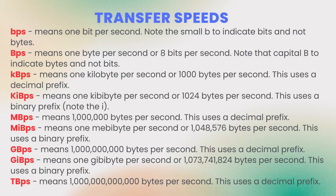These are the units of data transfer speeds. Notice the difference: lowercase 'bps' means bits per second, while uppercase 'Bps' means bytes per second — the small 'b' indicates bits, not bytes. 'kbps' means kilobytes per second, or 1000 bytes per second, and 'kibps' means kibibytes per second, which is 1024 bytes per second. Likewise, we have megabits per second, megabytes per second, gigabits per second, and gigabytes per second.